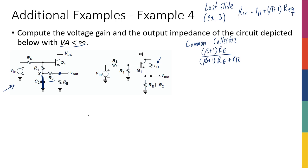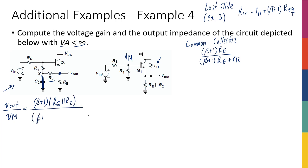That gain formula is only valid if the input is applied directly to the base. Right now, the input is not exactly at the base — only a fraction of the input reaches the base. So we need to calculate that fraction. I'll define V_m at the base node, so V_out over V_m equals (beta + 1) times Re (which is Re in parallel with R2) over the same term plus R_pi. Now, what is V_m over V_in? A common mistake is to just write R1 over (R1 + Rs) as a simple voltage divider.